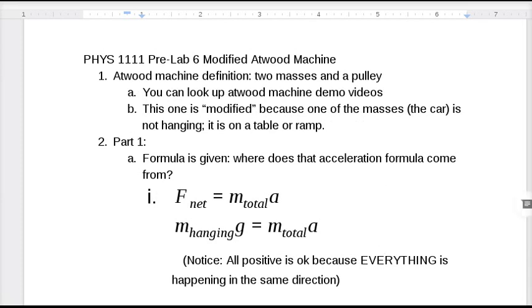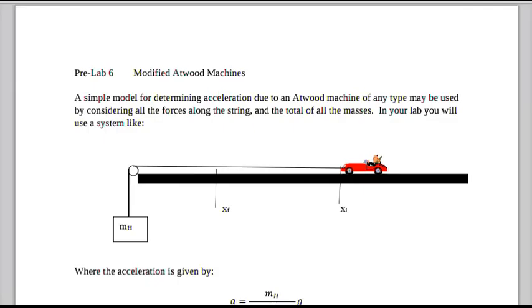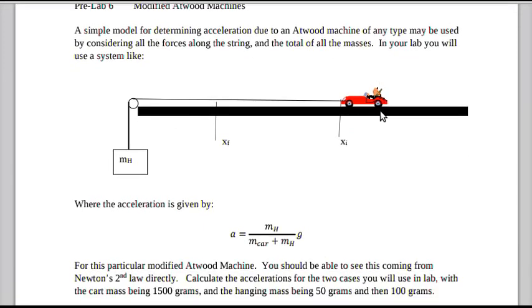In the sheet, you're given a formula for the simplest case. When the car is on the table and the other mass is hanging, the acceleration is the hanging mass divided by the sum of all the masses times little g, 9.8 meters per second squared.